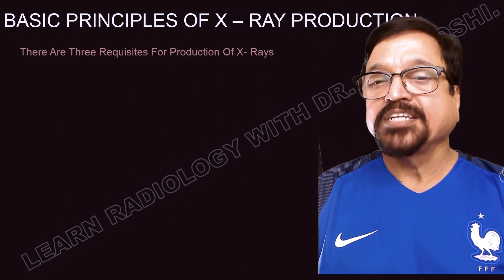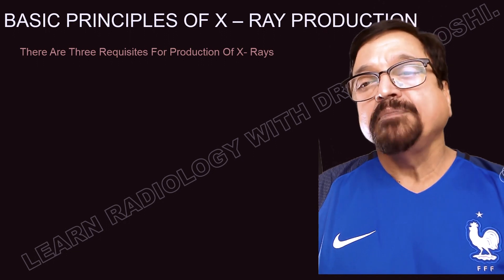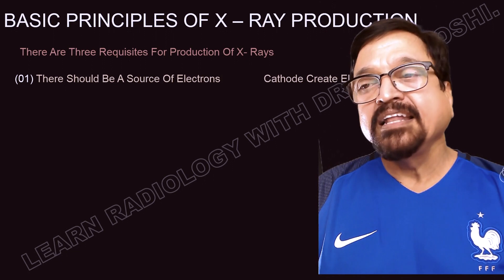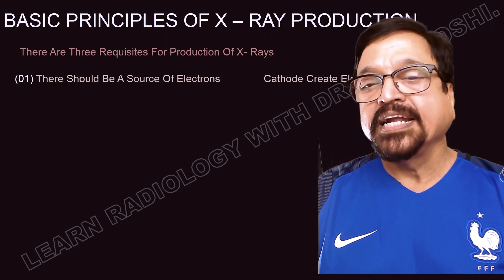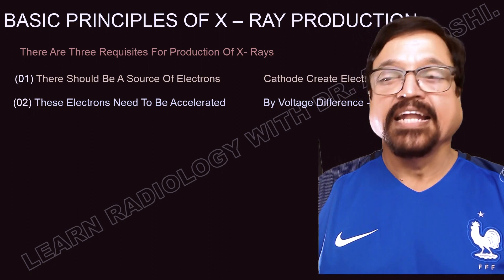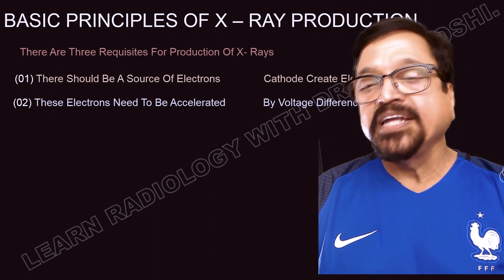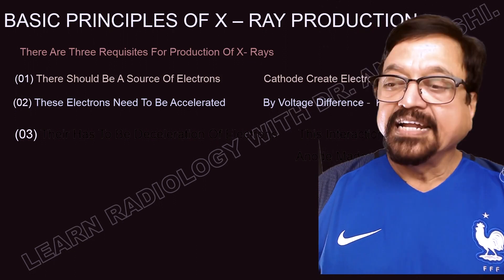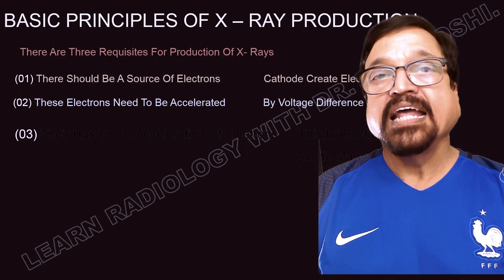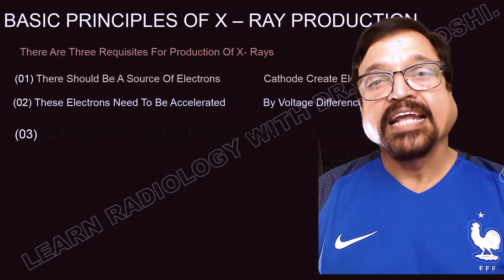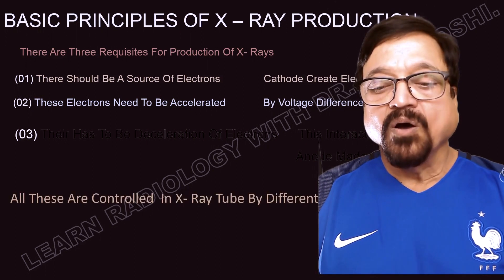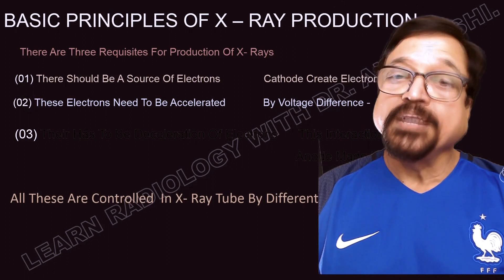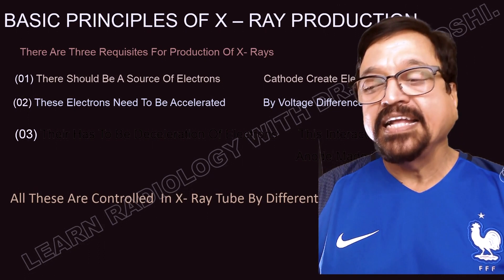The basic principles of X-ray production require three things: first, a source of electrons — this is done by the cathode, which creates the electrons. Second, the electrons need to be accelerated, which is achieved by a potential difference — the voltage, referred to as kVp. Third, there must be deceleration of the electrons, which occurs in the anode made of tungsten, where X-ray production takes place. All these are controlled in the X-ray tube by different factors and designs.